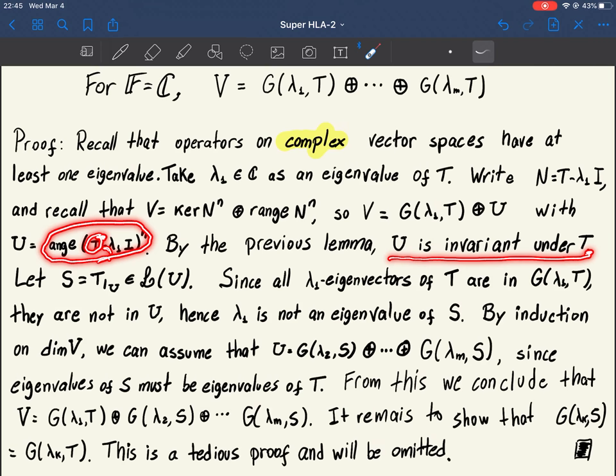So U is invariant. So we can define an operator S as the restriction of the operator T to the space U. And since U is invariant, S takes values again in U. So S is an operator defined on U and taking values on U.